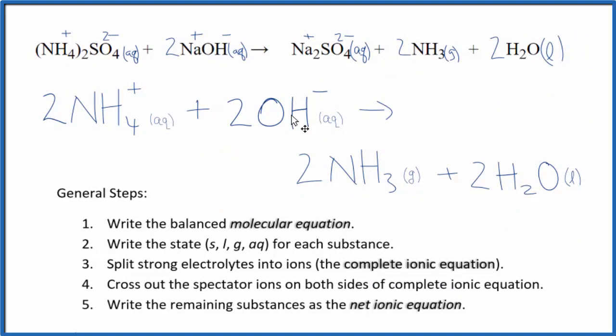And this is the balanced net ionic equation for ammonium sulfate plus sodium hydroxide. You'll note that charge is conserved. We have a positive and a negative. They balance out to a net charge of zero. And these are all neutral compounds. Net charge of zero over here. And if you count the atoms up, they'll be the same on both sides.